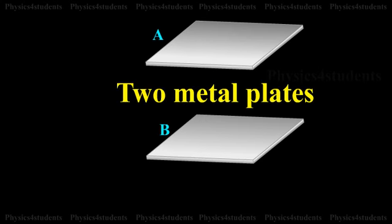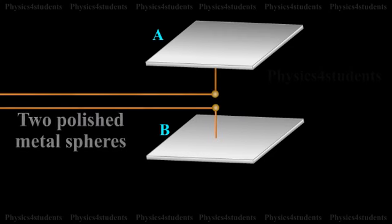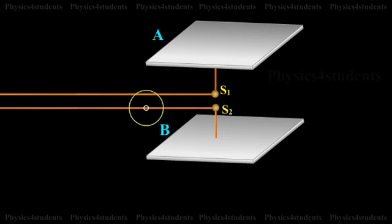It consists of two metal plates A and B placed at a distance of 60 cm from each other. The metal plates are connected to two polished metal spheres S1 and S2 by means of thick copper wires.